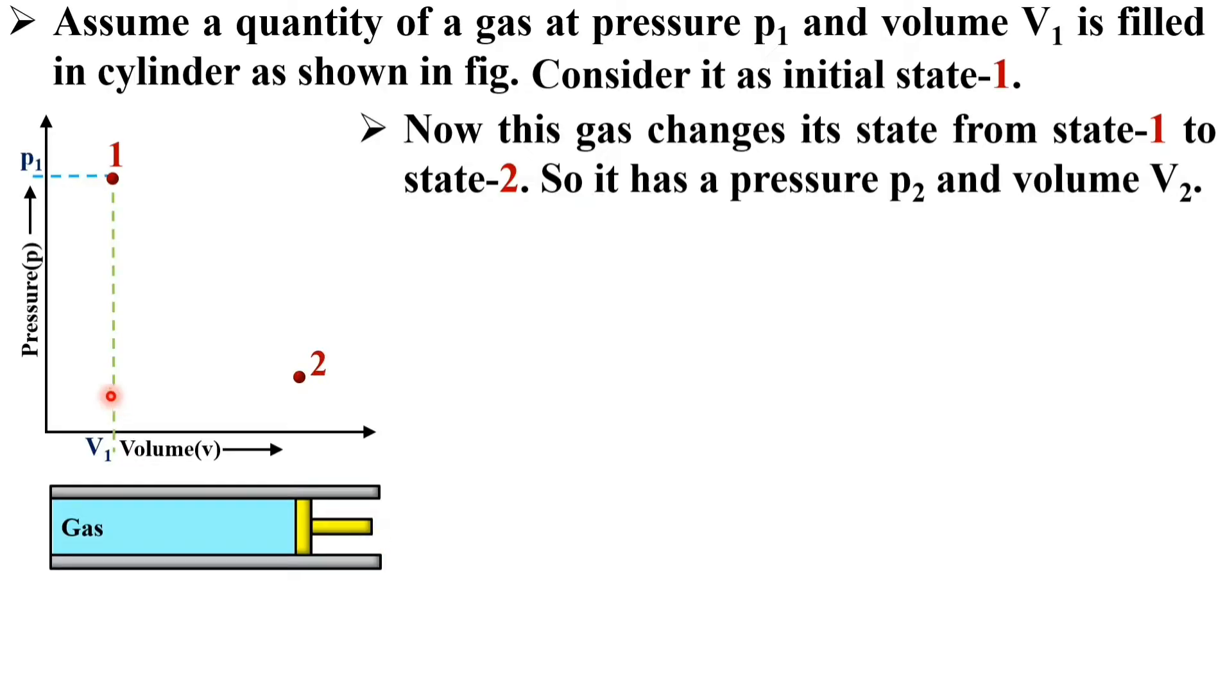On the PV diagram, the state 2 of the gas is over here and the corresponding pressure is P2 for state 2 and the corresponding volume is V2.